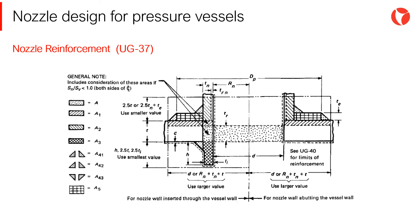If a nozzle cross section is analyzed, as in the picture shown, there are different areas perfectly differentiated. The basic reinforcement calculation method, laid out in paragraph UG-37, consists of the compensation of these areas. Basically, the area that is removed by drilling the hole must be compensated by the sum of all other contributing areas within the reinforcing limits. The calculation method is very simple, though long and repetitive. Designers must always consult the code prior to any calculation.